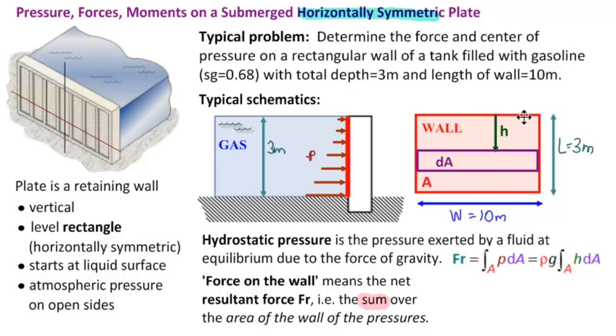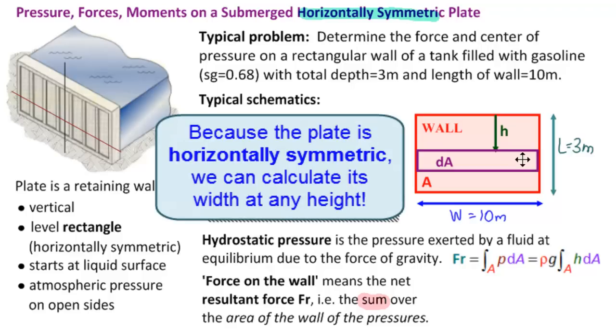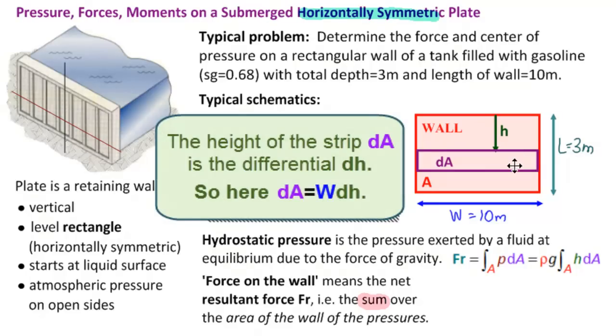In the vertical direction. Instead of little pieces and summing both this way and this way, we get these strips of dA whose width we can calculate from the shape of the plate and whose height is a differential dH, but we only need to sum in one direction, that is vertically. We get a single integral.